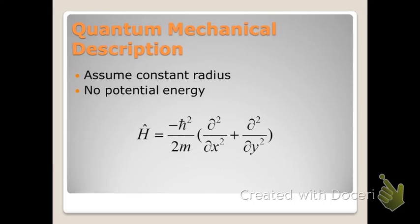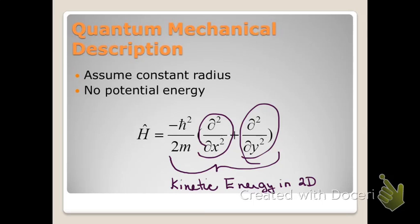The quantum mechanics of this motion requires that we write the Hamiltonian operator for motion in two dimensions. We'll assume that the potential energy is zero, so the only term we need to be concerned about is kinetic energy. Since we're talking about two dimensions, we need the second derivative with respect to x and with respect to y.